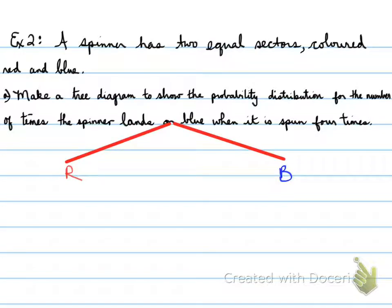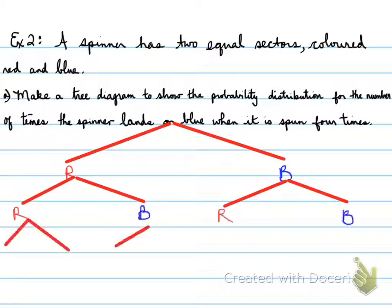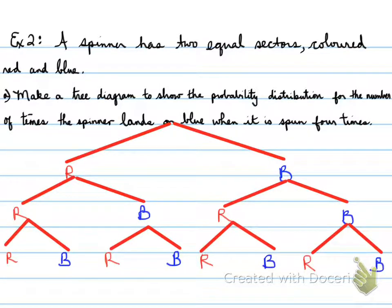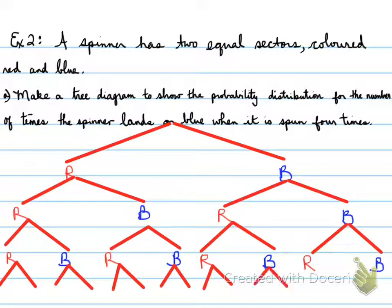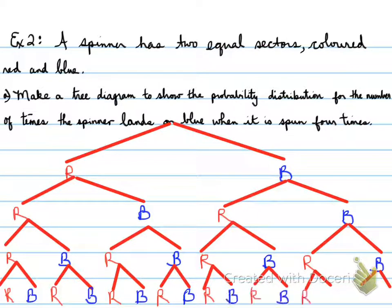Starting with red and blue, we spin again and again and again. Each branch splits into red and blue, giving us a full tree diagram with four levels of branching.